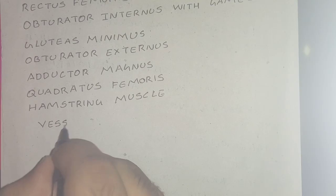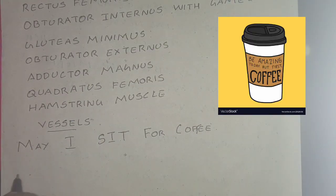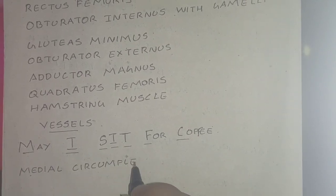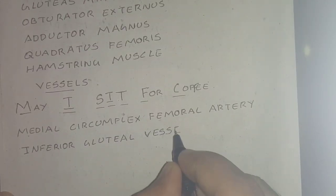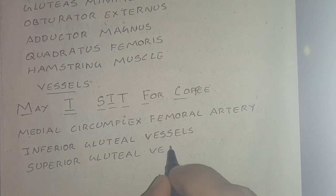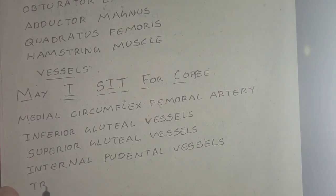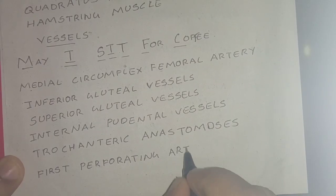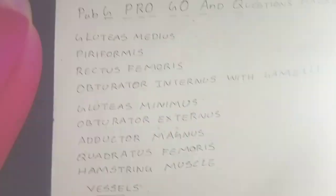For the vessels, the mnemonic is 'May I Sit For Coffee.' M stands for medial circumflex femoral artery, I for inferior gluteal vessels, S for superior gluteal vessels, I for internal pudendal vessel, T for trochanteric anastomosis, F for first perforating artery, and C for cruciate anastomosis. Thus we can remember the vessels.